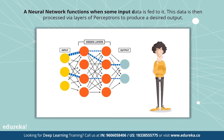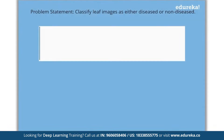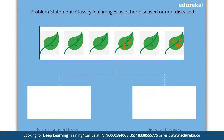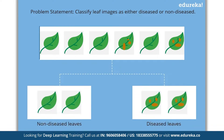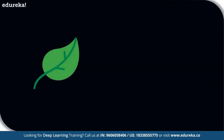A neural network functions when some input data is fed to it. This data is then processed via layers of perceptrons to produce a desired output. Consider a scenario where you have been given a set of labeled images and you have to classify them into two classes: one containing images of non-diseased leaves and the other containing images of diseased leaves. The process always begins with processing and transforming the input so that it can be easily processed. Each leaf image will be broken down into pixels depending on the dimension of the image.